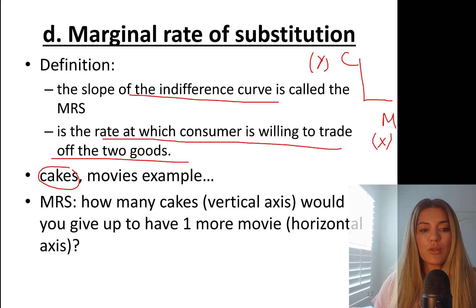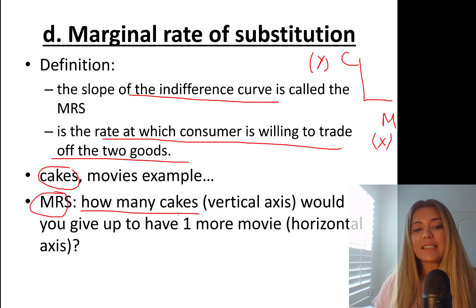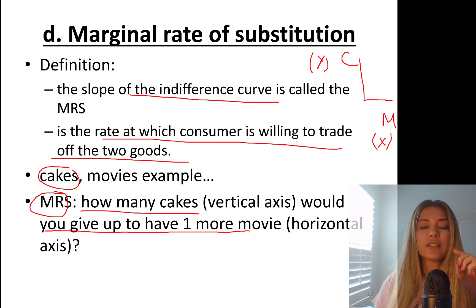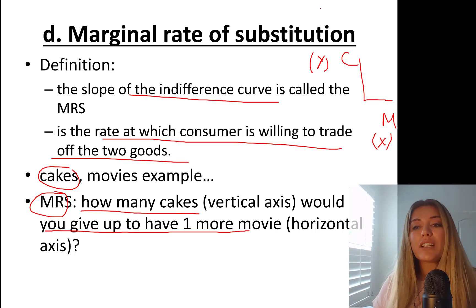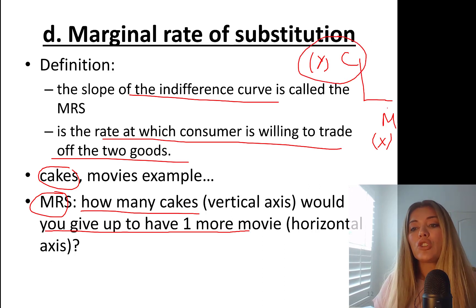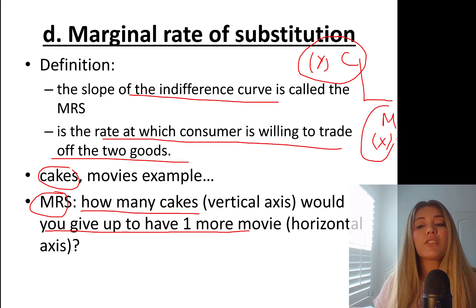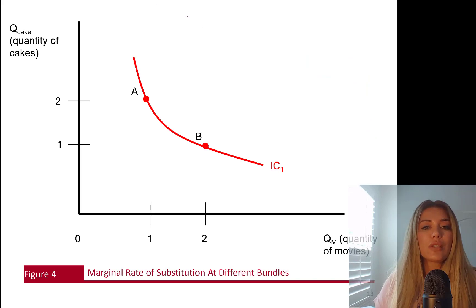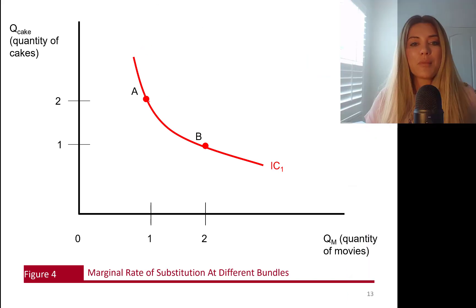So the marginal rate of substitution will tell you how many cakes you would give up to have one more movie. It shows how many of whatever you have on the y-axis you're willing to give up to have just one more of whatever you have on the x-axis. Let's take a look at this indifference curve example — remember points A and B on indifference curve 1.